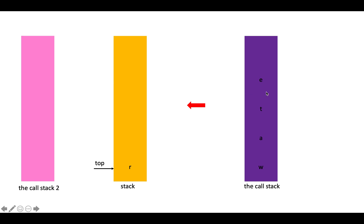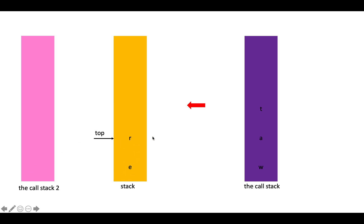Then we deal with element E. Since the stack is not empty, we pop the existing element out and push it onto our cross stack. Now the stack is empty again, so we put E into our stack, then pop R back out and push it back on. So currently we have a stack with E on top of R.